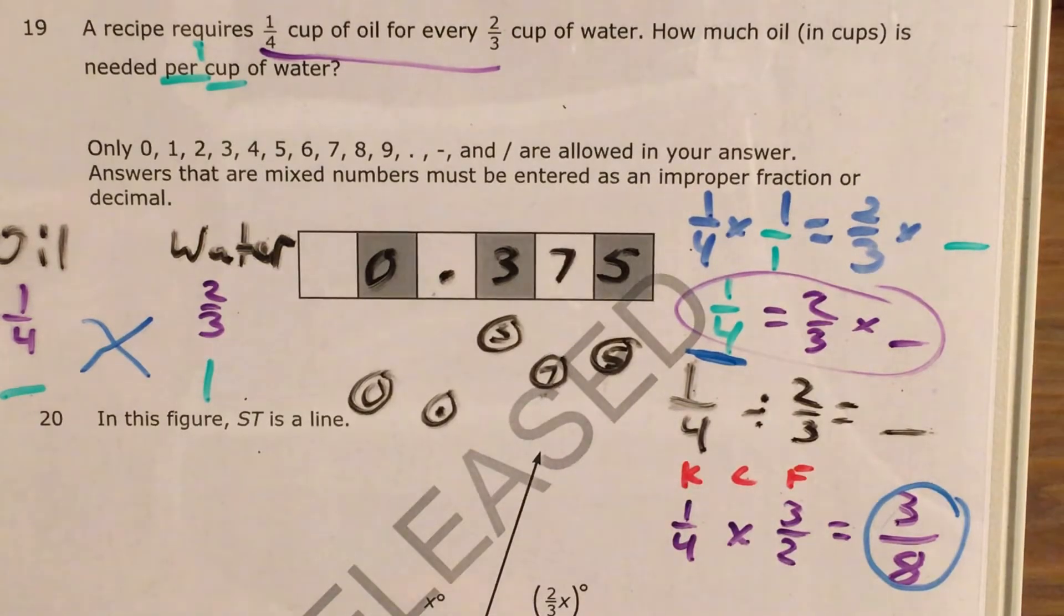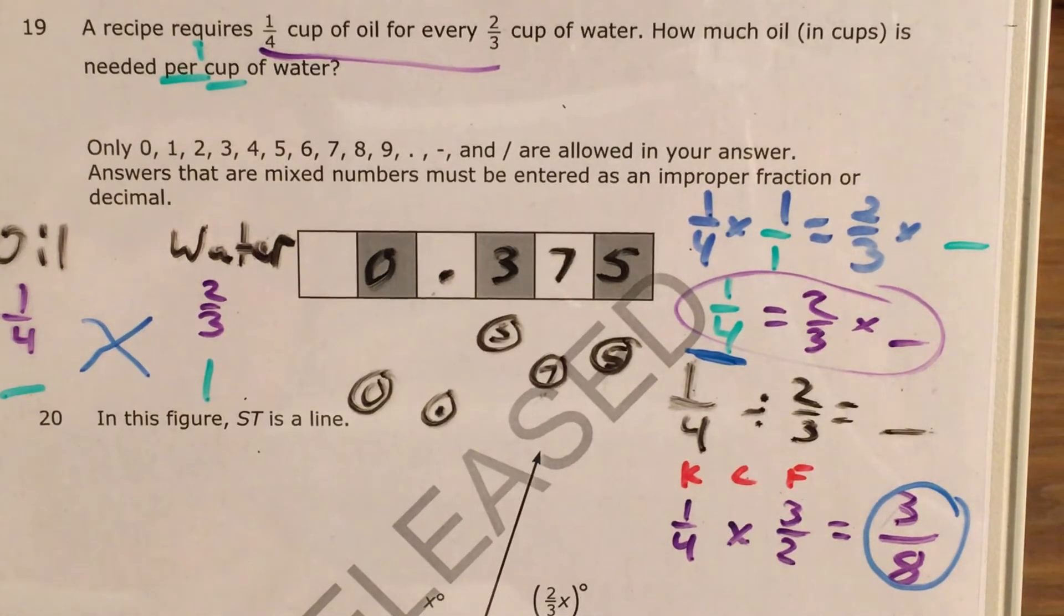Either way, they're equivalent, they represent the same number, which is three-eighths or 375 thousandths. And now, I'll show you the next one, and I'll make an answer. We'll be right back.